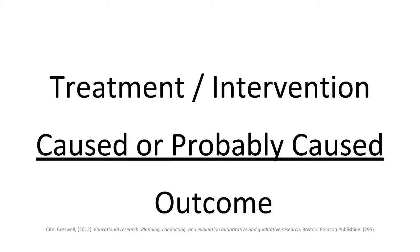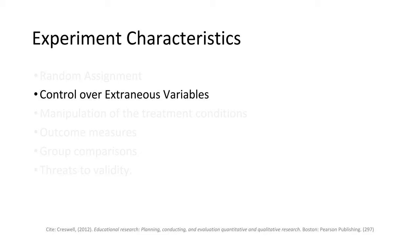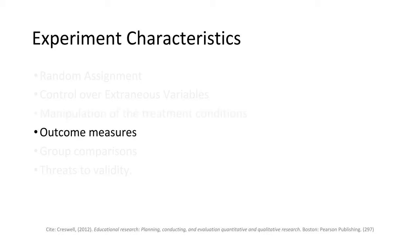Because of this, Cresswell indicates some key characteristics for experiments. The first is random assignment — this sounds simple, but there's actually some complexity to it. Second is control over variables; we want to eliminate as many influences as possible so we can say that our idea had some sort of impact on the outcome. The next is manipulating treatment conditions, where the researcher is actually doing some sort of intervention to see if that impacts the outcome.